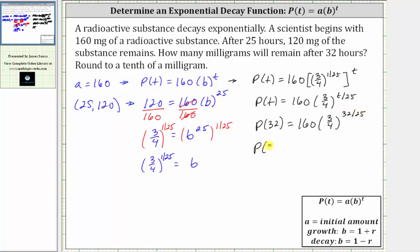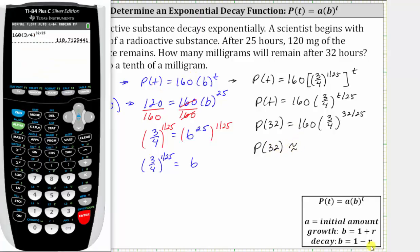And now we'll go with the calculator, and round to the nearest tenth of a milligram. To the nearest tenth, we have 110.7 milligrams.